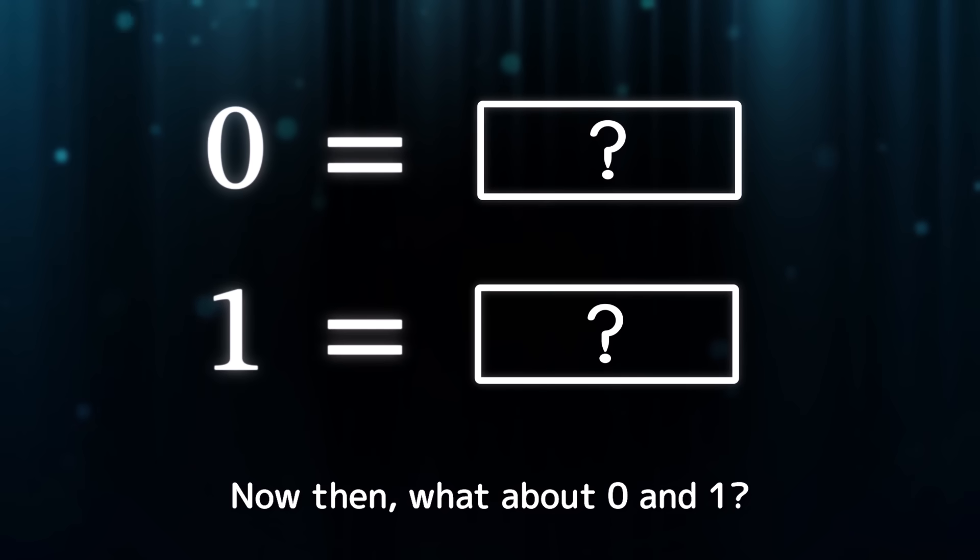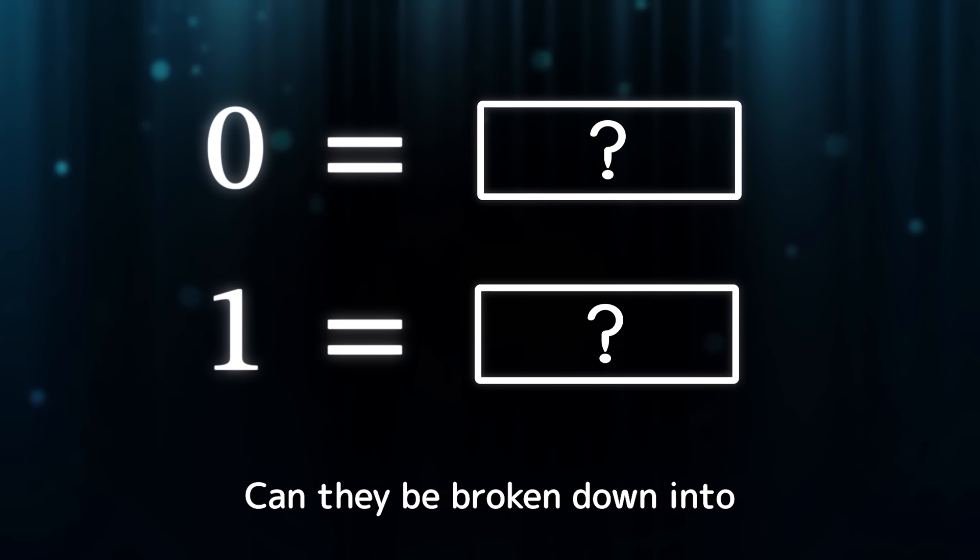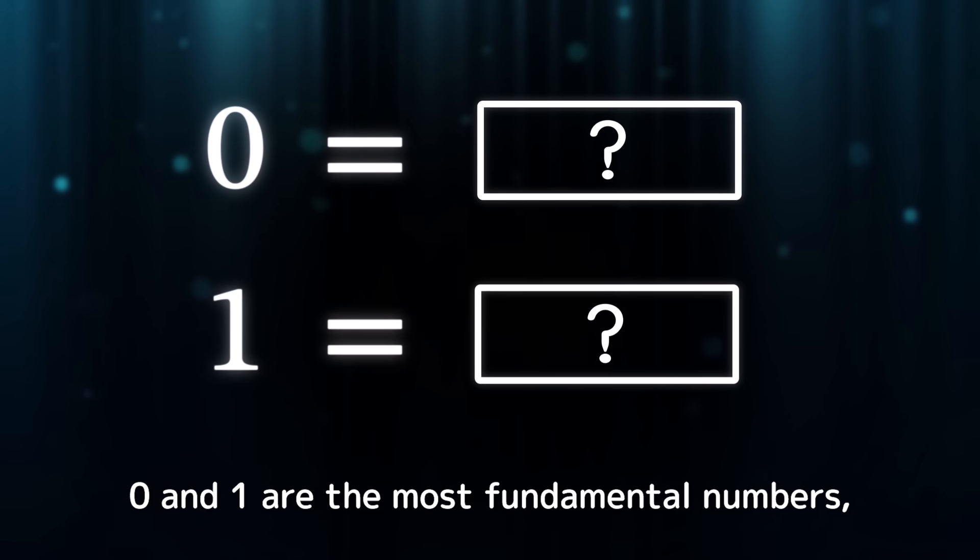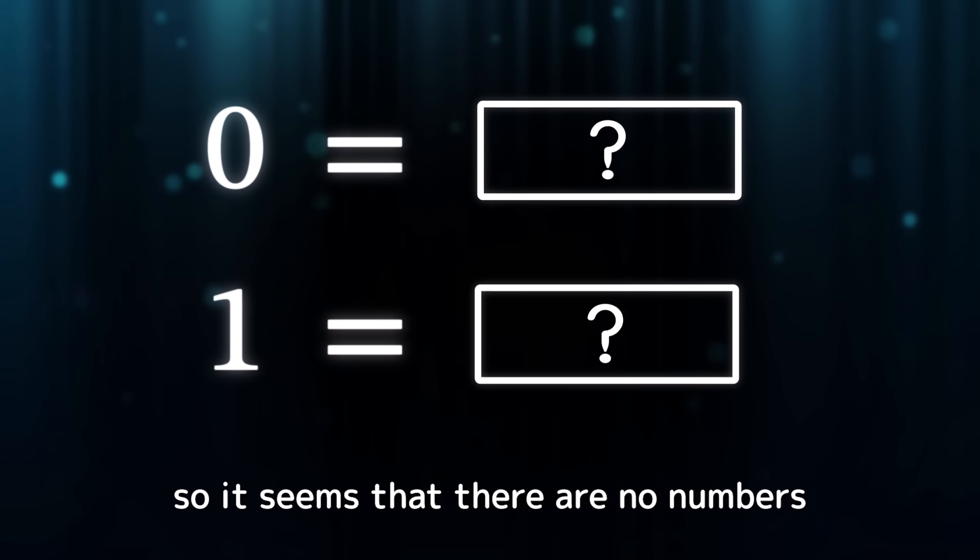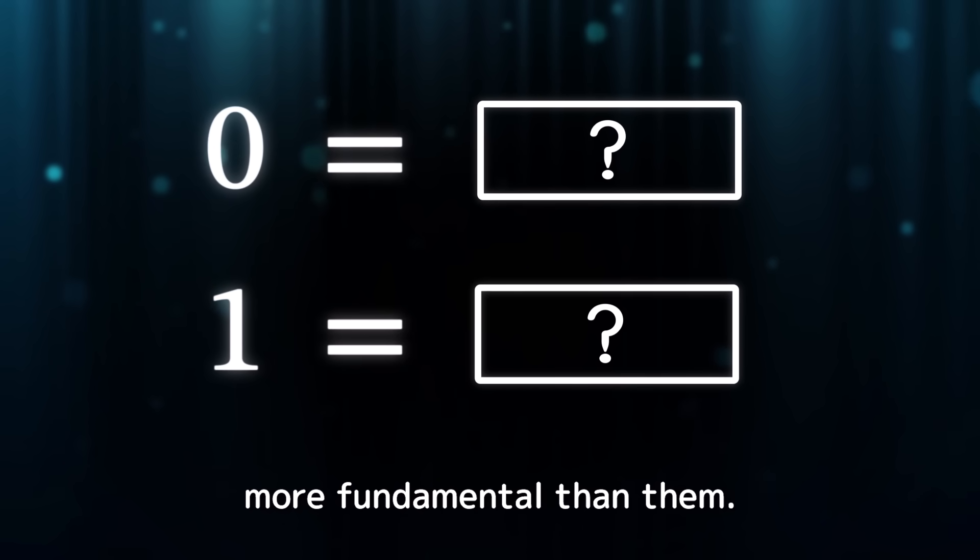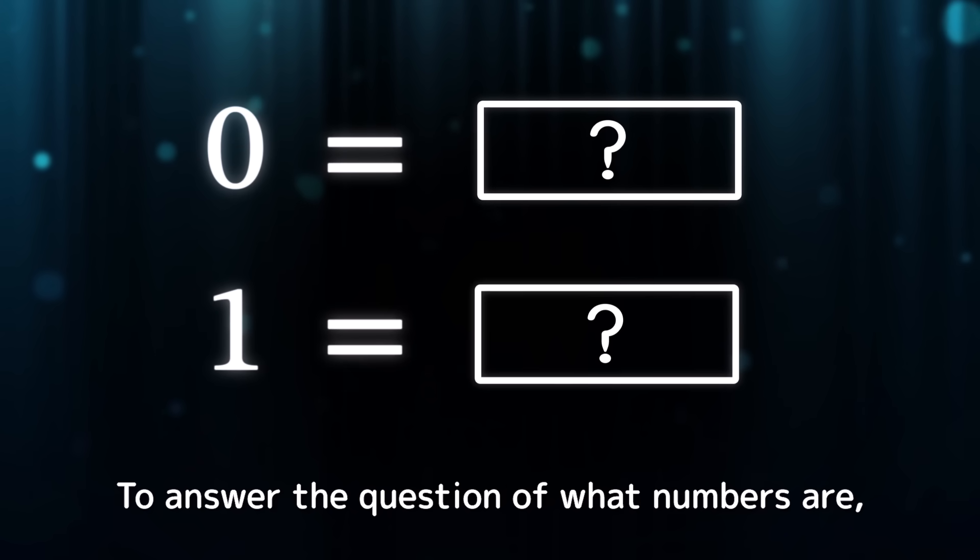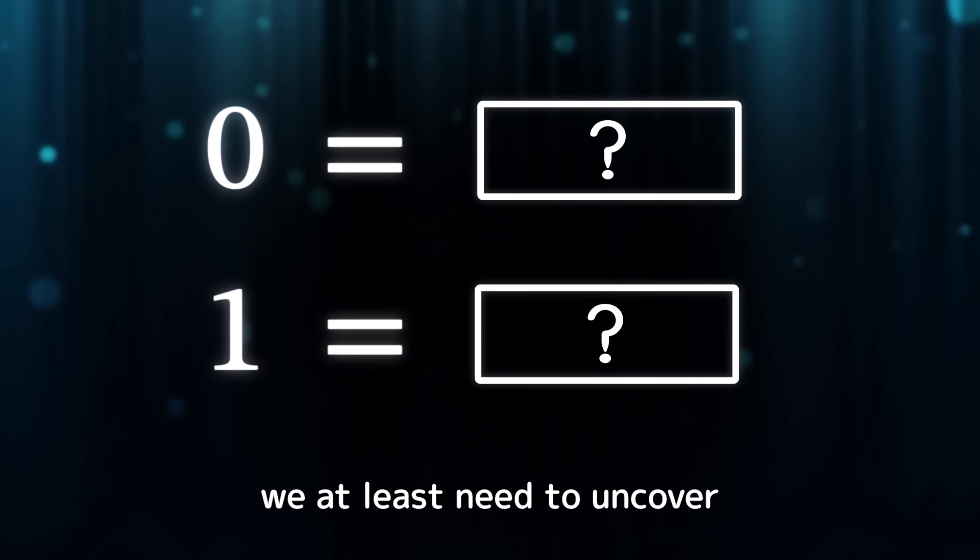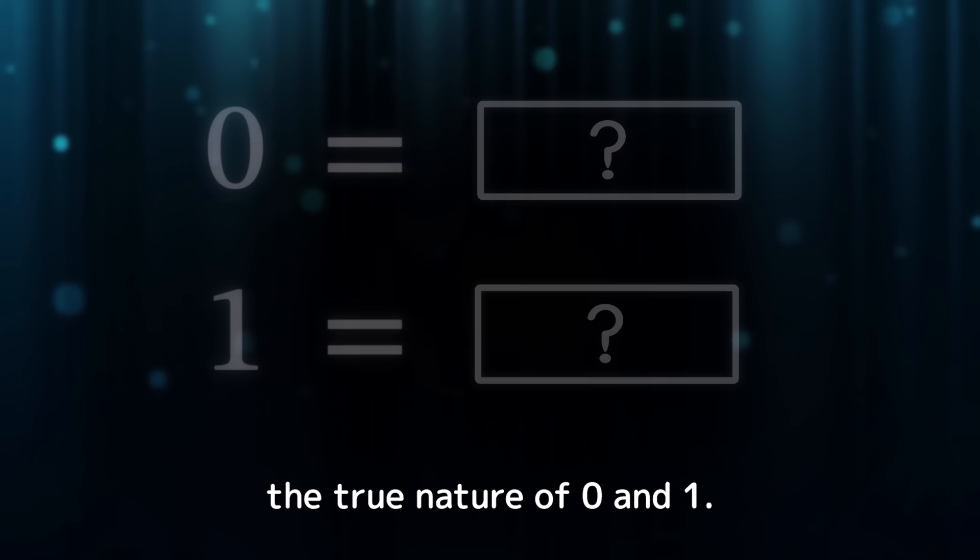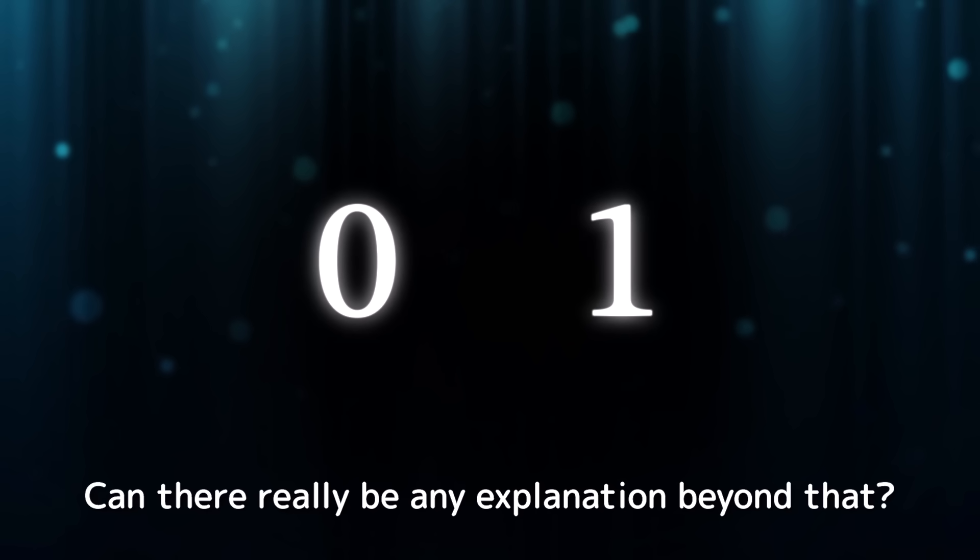Now then, what about 0 and 1? Can they be broken down into more fundamental numbers? 0 and 1 are the most fundamental numbers, so it seems that there are no numbers more fundamental than them. Then what exactly are 0 and 1? To answer the question of what numbers are, we at least need to uncover the true nature of 0 and 1. But 0 is 0, and 1 is 1. Can there really be any explanation beyond that?